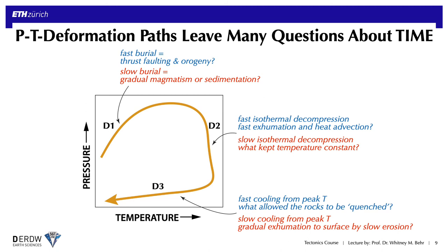Metamorphic petrology provides another piece of the puzzle that, combined with structural geology, gives us information about the deformation and the conditions at which the deformation occurred. But it of course leaves open many questions about the fourth dimension of time. Here's a generic pressure-temperature path showing three deformation events under three different metamorphic regimes: D1 occurred under prograde conditions and reflects burial; D2 shows isothermal decompression with slight heating and reflects exhumation; and D3 occurred under cooling conditions during final exhumation to the surface.